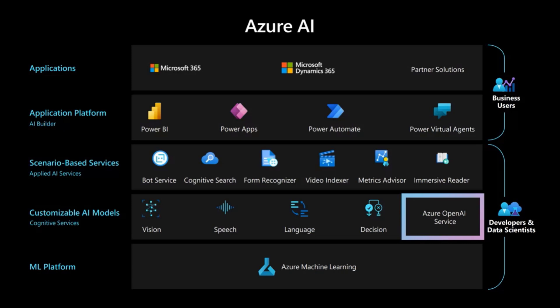As you can see in the image, Azure AI is split into layers: an application platform including the Power Platform; scenario-based services like cognitive search and form recognizer; customizable AI models such as cognitive services covering vision, speech, language, and decision. You can now use Azure AI Studio to access different services and models, and there's the ML platform where you can build your own Azure Machine Learning models from scratch.